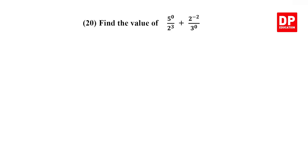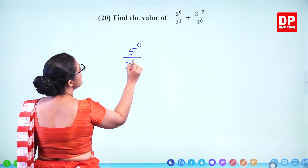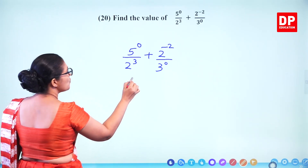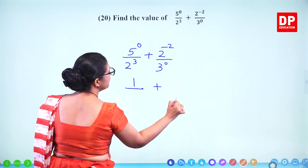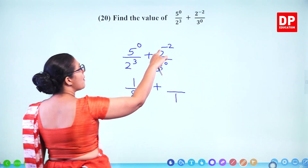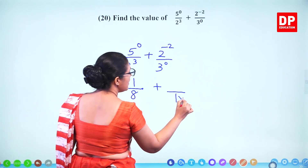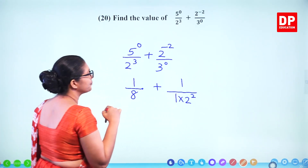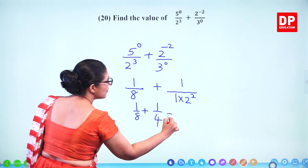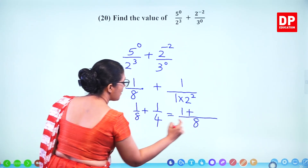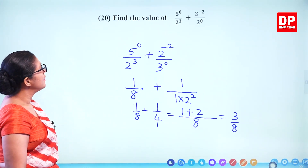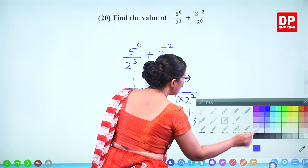Question number 20. Find the value of 5⁰ + 2³ + 2⁻² + 3⁰. Any number to the power 0 is 1, so 5⁰ equals 1 and 3⁰ equals 1. 2³ equals 8. 2⁻² equals 1 over 4. So you have 1 plus 8 plus 1/4 plus 1 equals 1 plus 1/8 plus 2/8 equals 3 over 8. Wait — taking the same denominator: 8 plus 2 plus 1 equals 3 over 8, so the value is 3 over 8. Two marks.